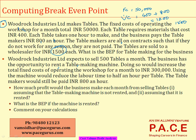To compute the break-even point, I can use the formula directly: fixed cost divided by (sales per unit minus variable cost per unit), which is the per unit contribution. My sales per unit is 1,500, my variable cost per unit is 1,200, and fixed costs are 50,000. So it works out to 50,000 divided by 300, which tells me there should be a minimum of 167 tables sold during the month for the company to break even.